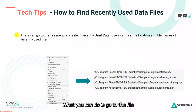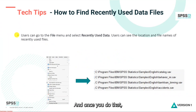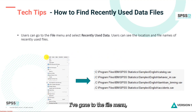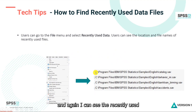What you can do is go to the File menu and select 'Recently Used Data.' Once you do that, you can see the location and file names of recently used files.